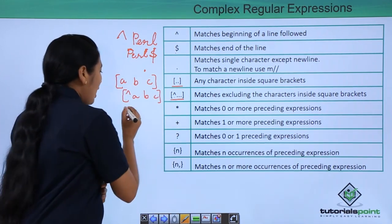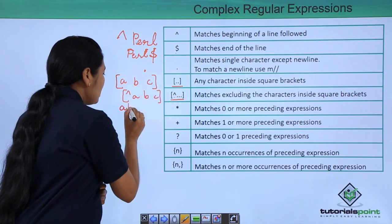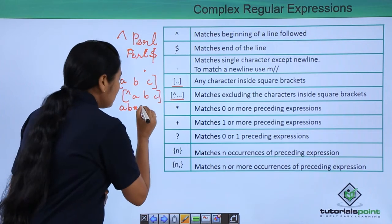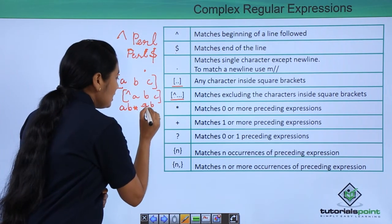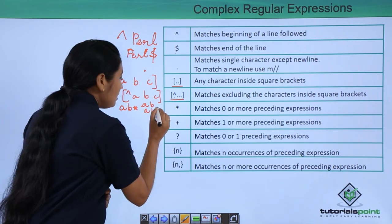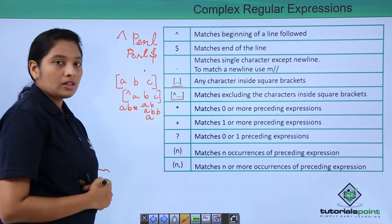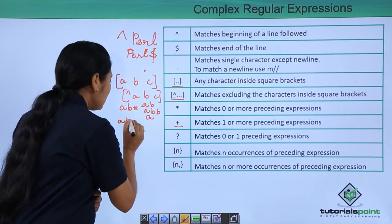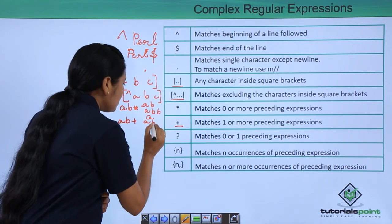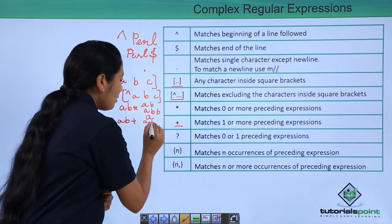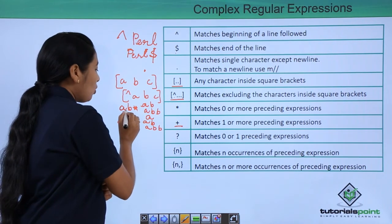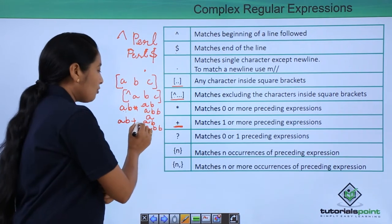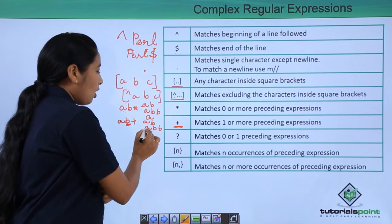Next is the star quantifier. If you have A B*, this means zero or more occurrences of B, so it will match A, AB, ABB, or just A. If you have plus — A B+ — that means it should match at least one occurrence: AB or ABB, but not just A alone. In star, if you have only A, that is fine, but in plus you have to match at least one occurrence.